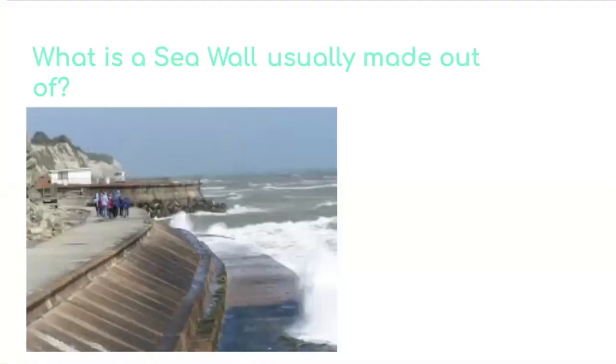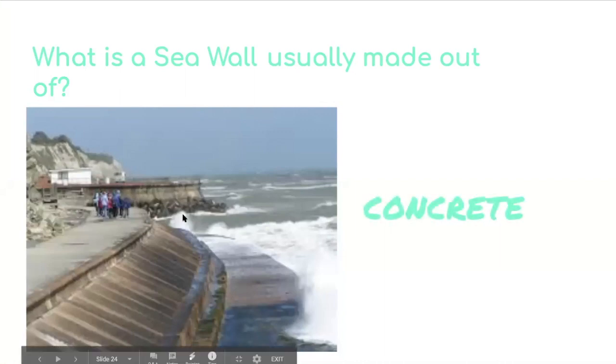What is a seawall usually made out of? Here's an erosion control. What are they usually made out of? What material? Concrete. Another answer could have been boulders. Those big, big rocks. Or even steel.